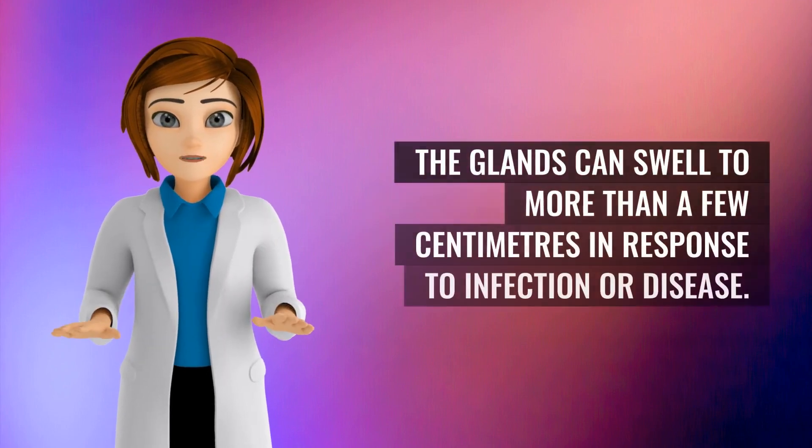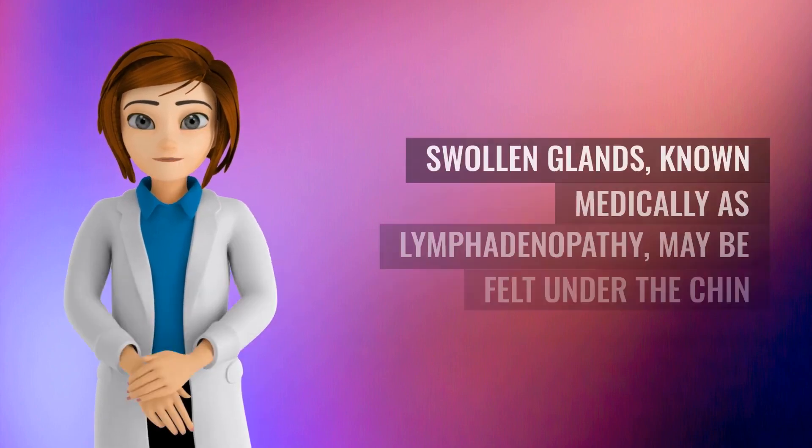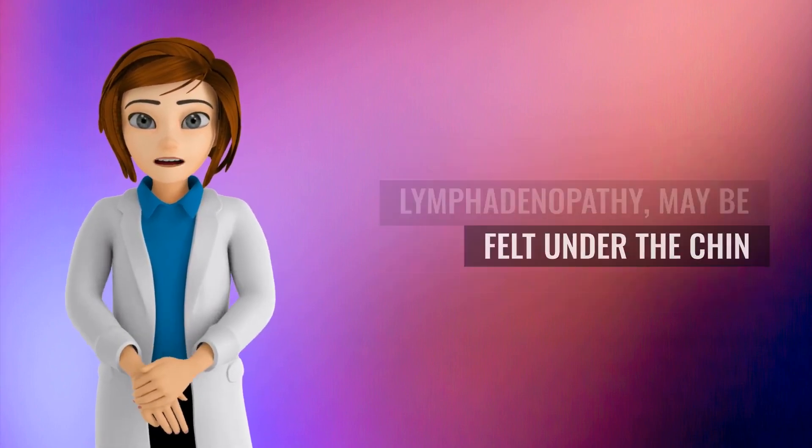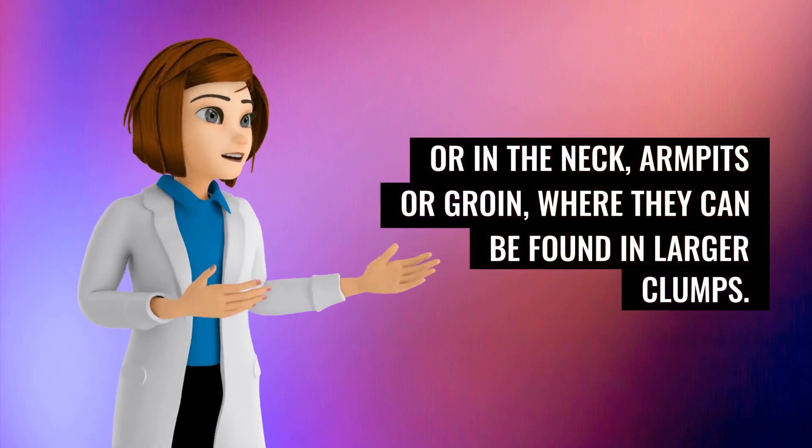The glands can swell to more than a few centimeters in response to infection or disease. Swollen glands, known medically as lymphadenopathy, may be felt under the chin or in the neck, armpits or groin, where they can be found in larger clumps.